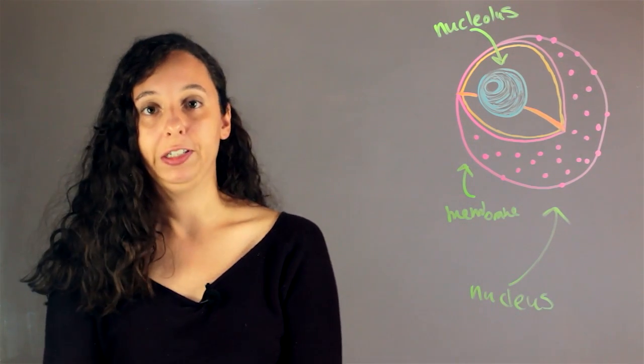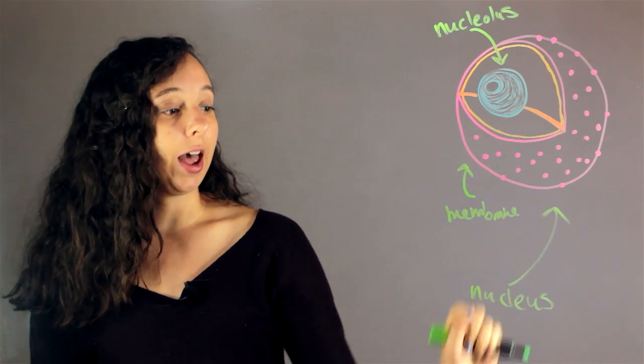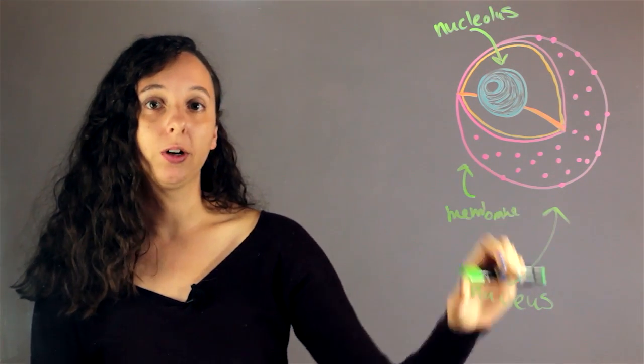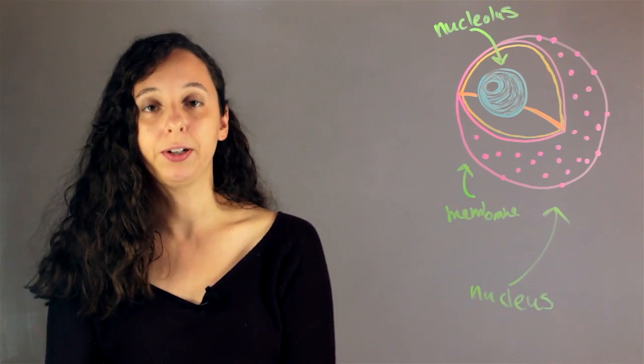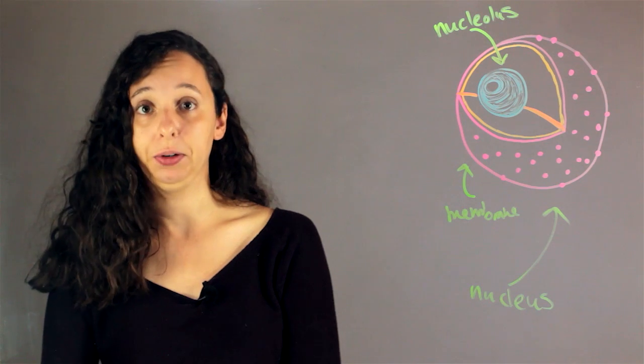So what are some differences? Well, first of all, this membrane is actually a pretty big difference. Every nucleus has a membrane, so kind of a protective layer that keeps it protected from the rest of the cell. Whereas the nucleolus has no membrane, it's just inside the nucleus.